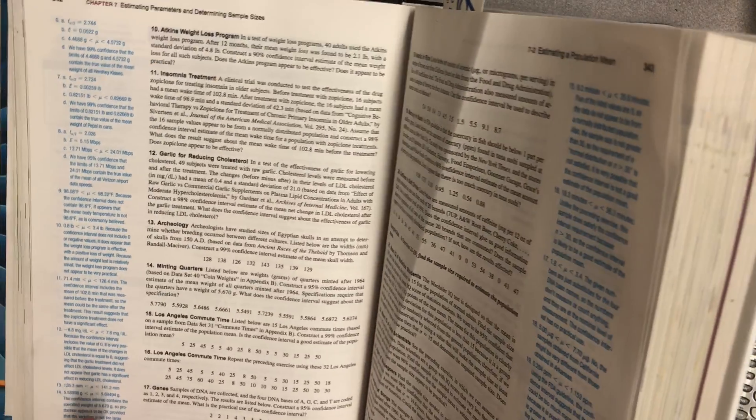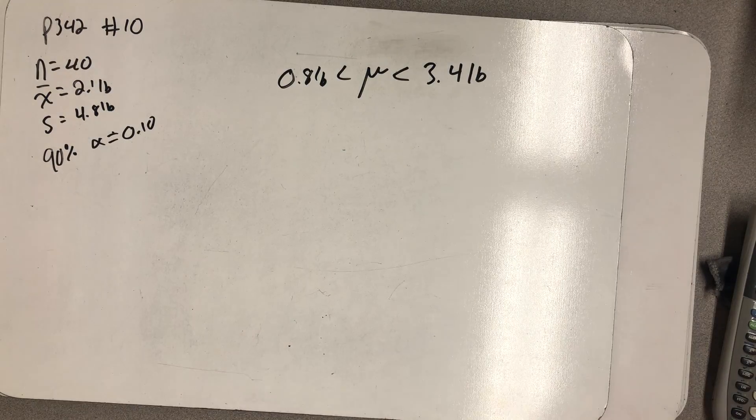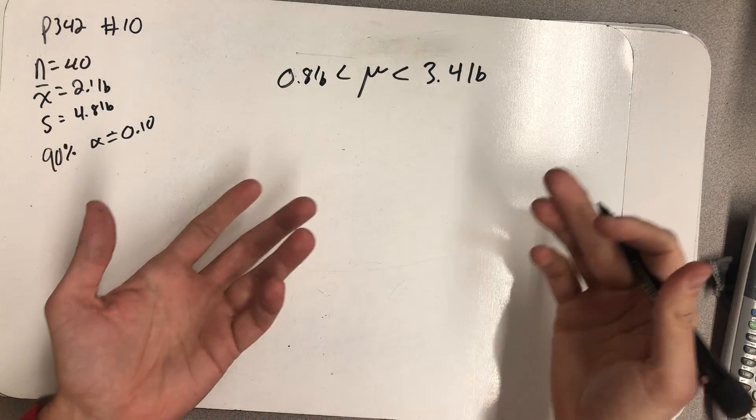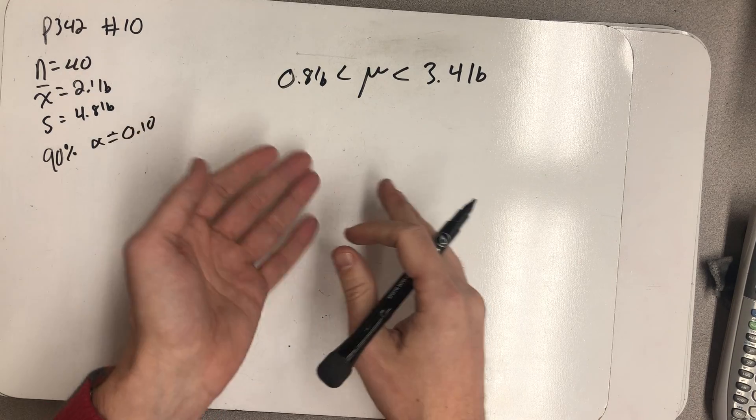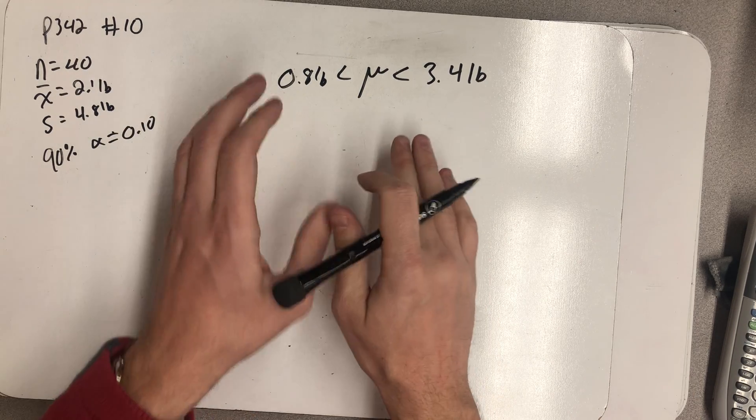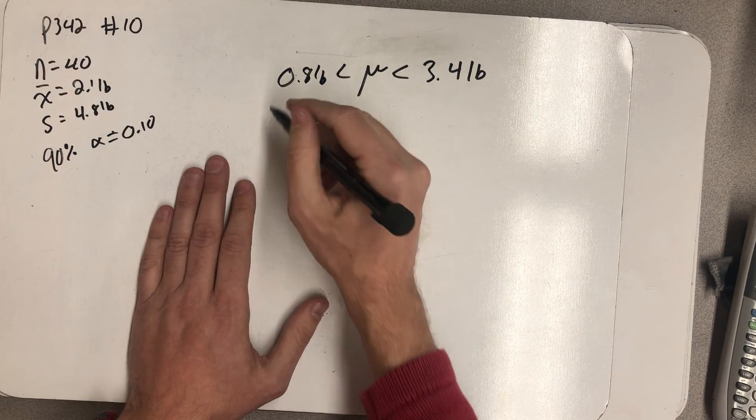Does the Atkins program appear to be effective? Well, average weight loss tends to be more than zero. I know it's between 0.8 pounds and 3.4 pounds. So people are losing weight.